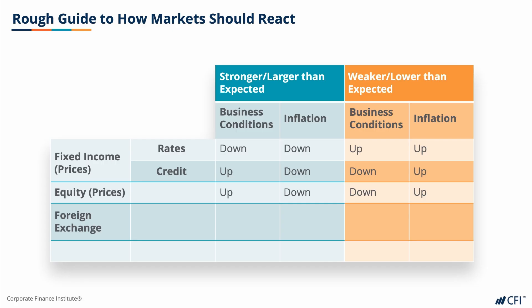Whenever economic health is strong, the domestic currency tends to rise versus that basket, as one would reasonably expect capital to come into the country for investment. Same goes for inflation, as higher inflation leads to higher rates in the short run, which causes the domestic currency to rally. If business conditions are worse than the market expects, you can also expect the opposite to happen, which is capital may leave the domestic currency in a capital flight, which causes the currency to weaken.